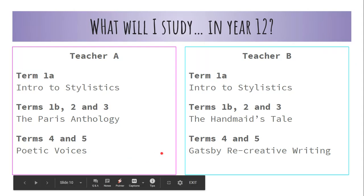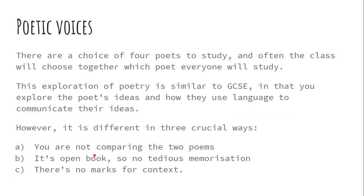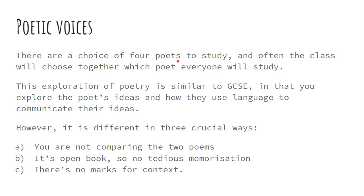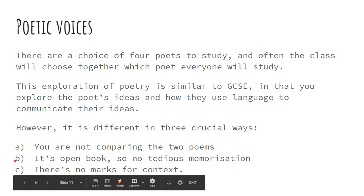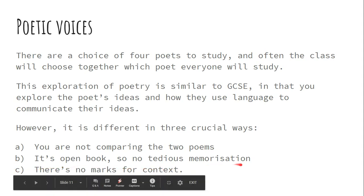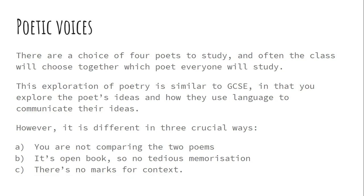In Terms 4 and 5 towards the end of Year 12, you move on to studying poetry with Teacher A. There are four different poets to choose from, and usually the teacher will explore them briefly with the class and then you vote on which poet you want to do. The poetry is similar to GCSE in that you explore the poet's ideas and how they use language to communicate them, just as you did with the power and conflict poetry. However, it's different in three crucial ways: you don't have to compare poems, it's open book so you don't have to memorise quotes, and there are no marks for context — though the ideas and language are more complex, which is what gives this unit its challenge.